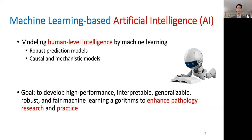Machine learning is a core technology underlying the current explosion of artificial intelligence applications. In my lab, we aim to model human-level intelligence by machine learning approaches. We aim to build robust clinical prediction models to predict important clinical outcomes based on pathological and molecular features, and we further build causal and mechanistic models to better understand the molecular mechanisms underlying human pathology manifestations and clinical outcomes. The goal of my research group is to develop high-performance, interpretable, generalizable, robust, and clear machine learning algorithms to enhance pathology research and practice.